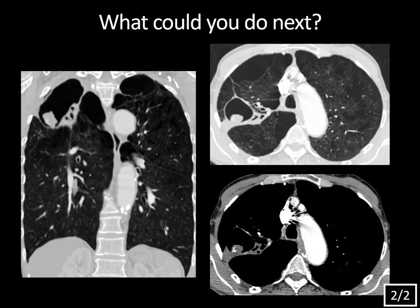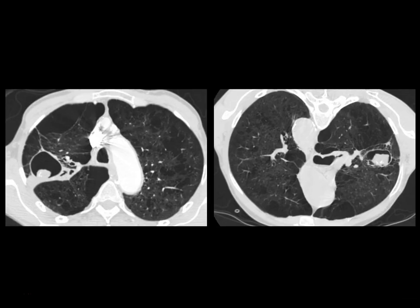On soft tissue windows, the nodule has soft tissue density and a few calcifications. Even though this is a thin-walled cavity, you want to make sure this is not a cavitating lung carcinoma with a mural nodule. You can scan the patient again in the prone position — ideally with a low-dose technique. In the supine series the nodule is dependent, and when the patient is flipped prone, the nodule remains dependent: it follows gravity and moves. If this were cancer with a mural nodule, it would remain fixed to the posterior wall. The cyst cavity also decreases in size due to physiologic compression. This is diagnostic of aspergilloma.